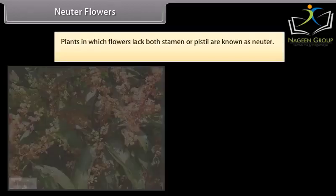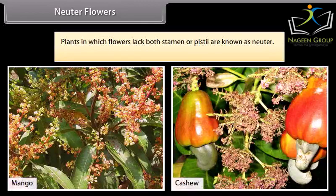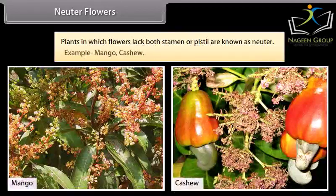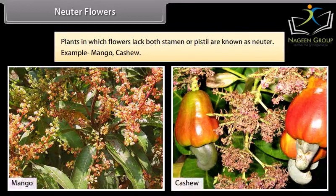Neuter flowers. Plants in which flowers lack both stamen or pistil are known as neuter. Example: mango, cashew.